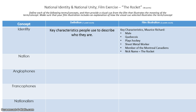What you will then need to do is define all of the remaining concepts and terms. Once all of them are defined, provide visual cues as you watch the film that visually illustrate the meaning of each concept. Remember, as you provide these visual cues, you need to explain exactly how they visually illustrate the meaning of the concept. Now that you know how to complete the exercise, why don't you have at it. Good luck.